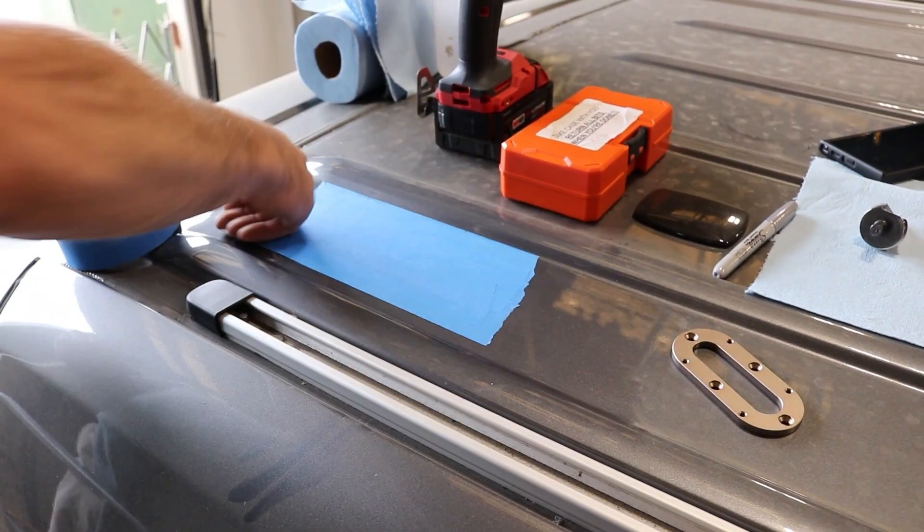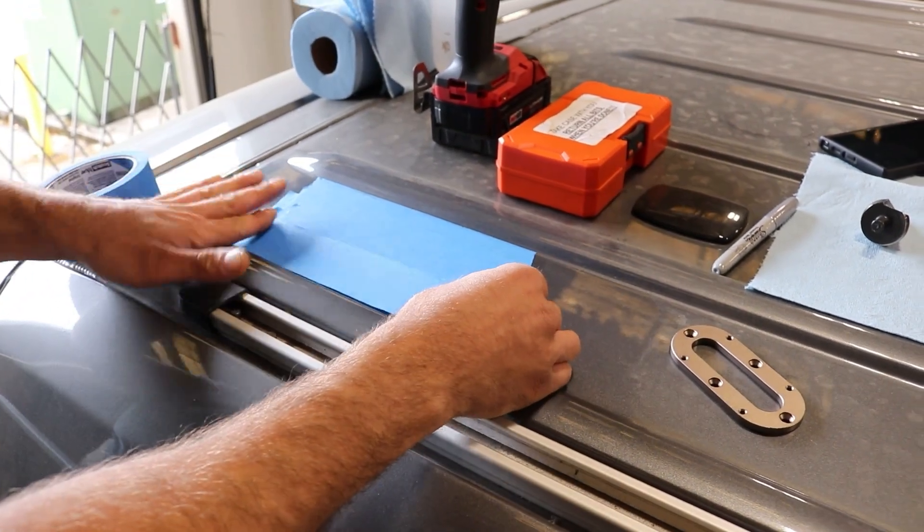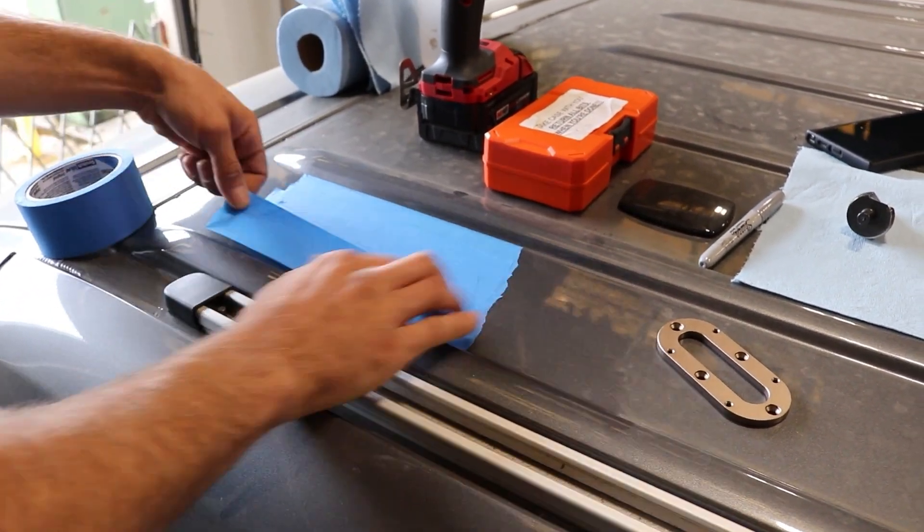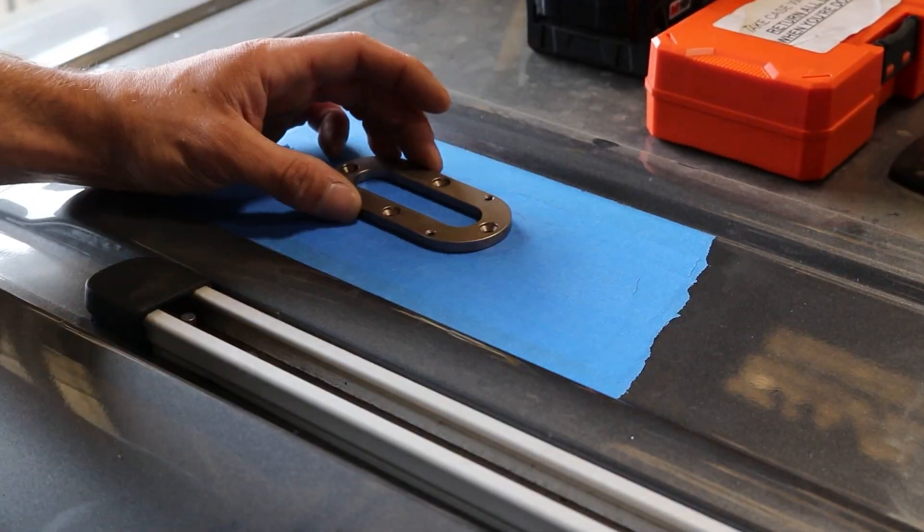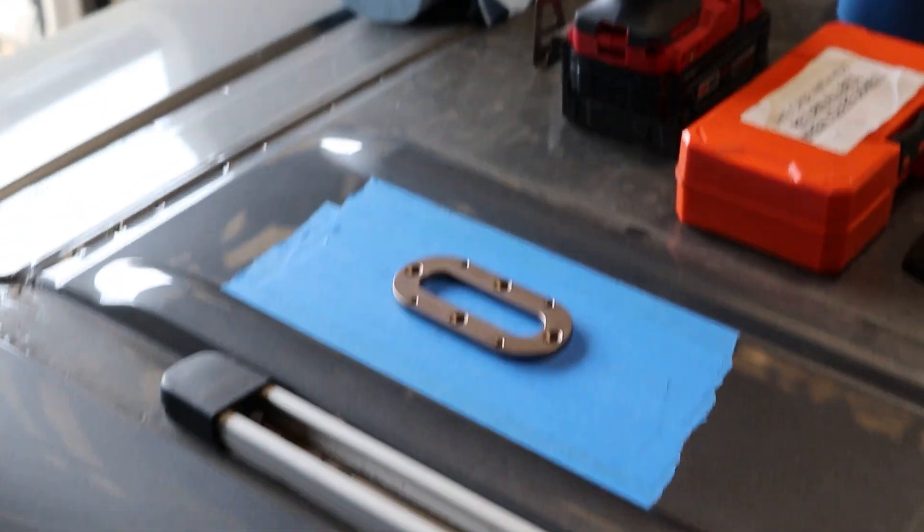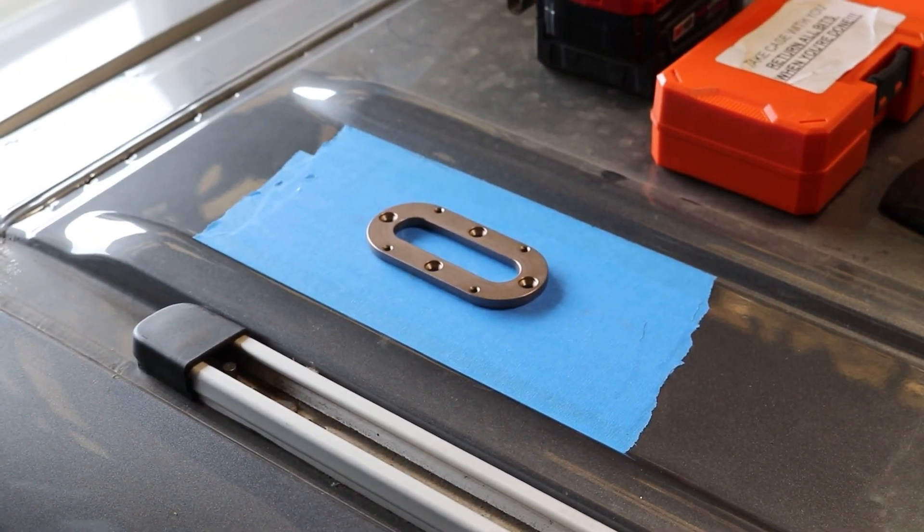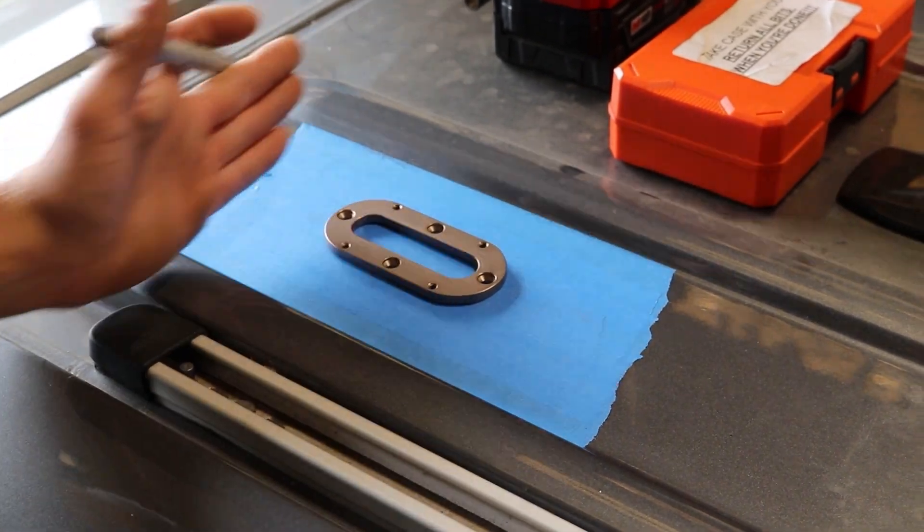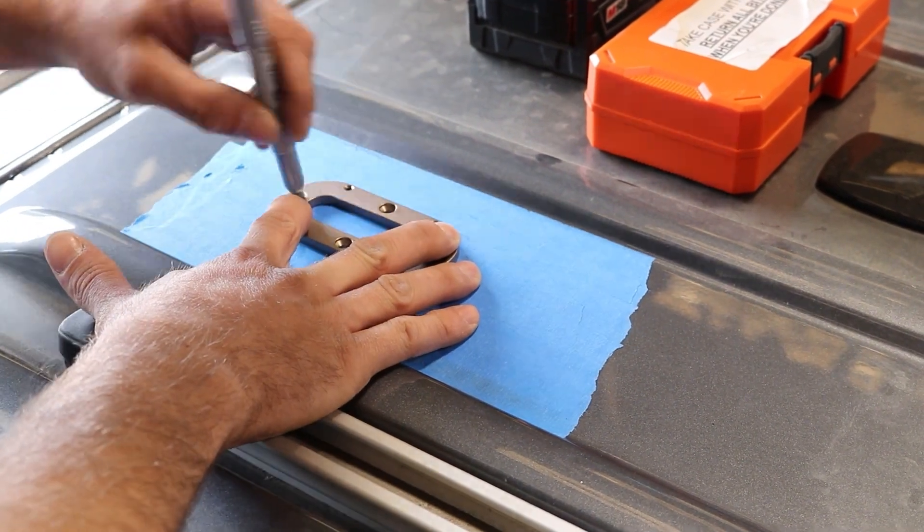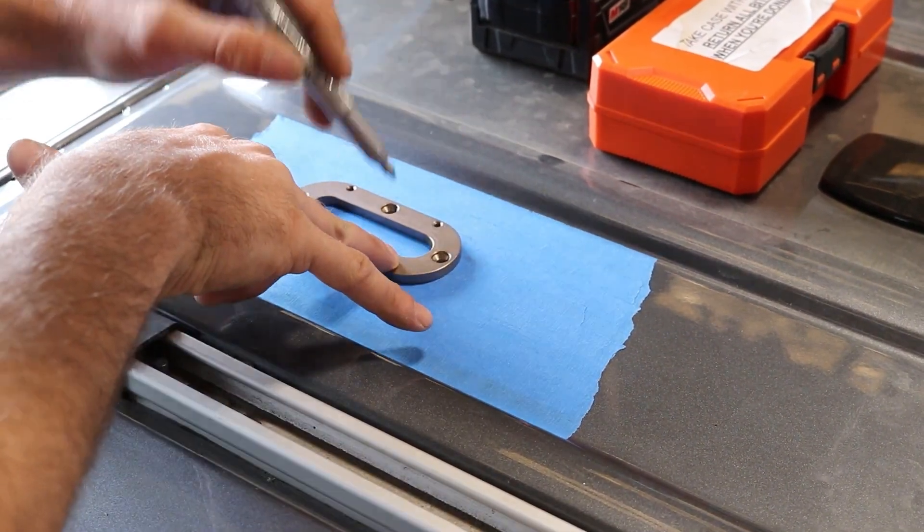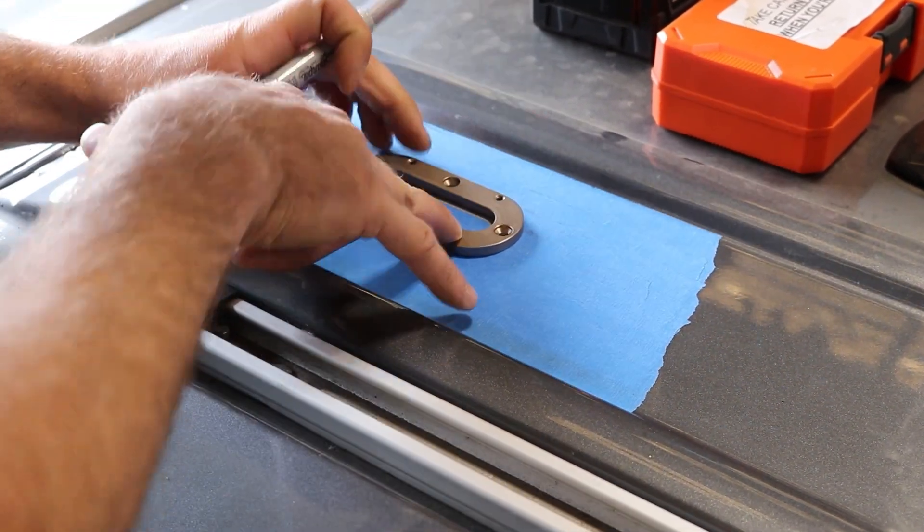We put some tape in the area to protect the roof of the van when you're running tools over it and prevent scratches. Then we're locating the solar gland area and using it as a template for our pilot holes. We usually try to center between the corrugations of the roof and line up the front edge of the solar gland with the front edge of the factory roof rail. We're tracing out all the areas with a marker that need to be cut or drilled.